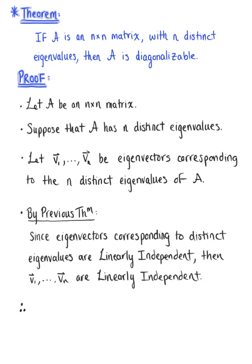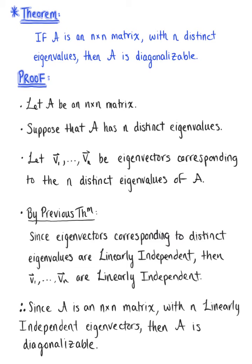Therefore, since matrix A is an n by n matrix with n linearly independent eigenvectors, matrix A is diagonalizable, which completes our proof.